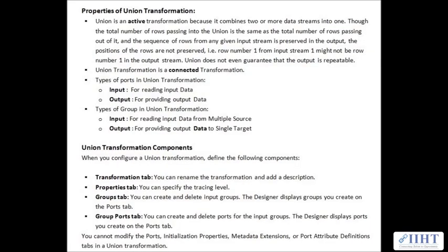Union is an active transformation because it combines two or more data streams into one. Though the total number of rows passing into the union is the same as the total number of rows passing out of it, and the sequence of rows from any given input stream is preserved in the output, the position of rows is not reserved. For example, row number one from input stream one might not be row number one in the output stream. Union does not even guarantee the output is repeatable.